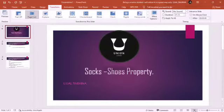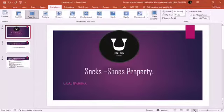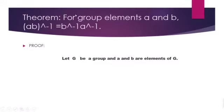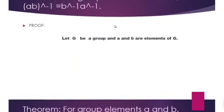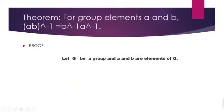Hello viewers, welcome back to this video on the Socks-Shoes property. This is one of the very important properties of a group. It says that for group elements A and B, AB whole inverse is always the same as B inverse times A inverse. This is what the Socks-Shoes property says.